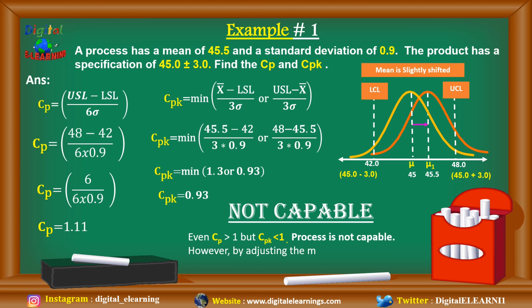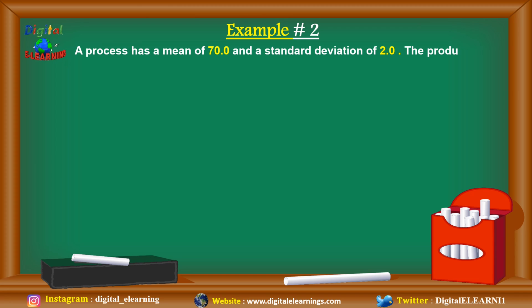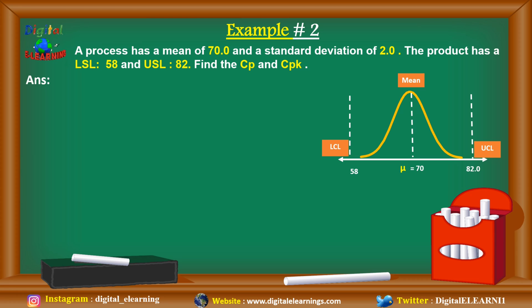Let's take a second example. A process has a mean of 70 and a standard deviation of 2. The product has a lower specification limit of 58 and an upper specification limit of 82. We need to find cp and cpk. The process mean is centered at 70, exactly between the specification limits.